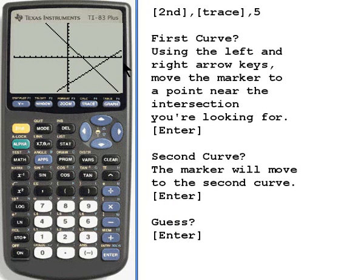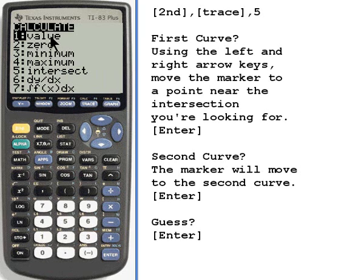What we're going to do is press the second button, second, and then trace. I get the menu and I want item number 5, intersect.